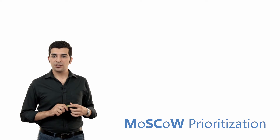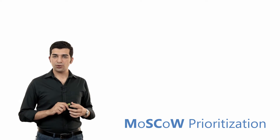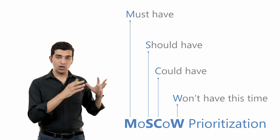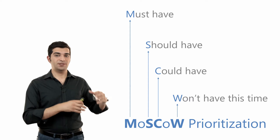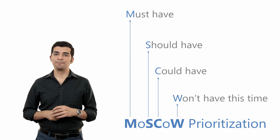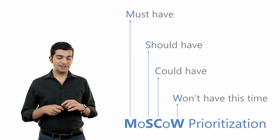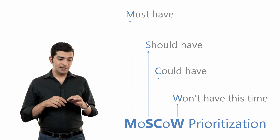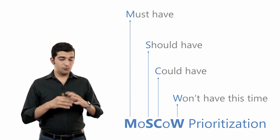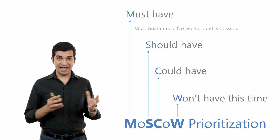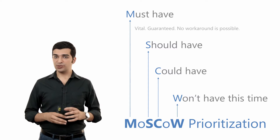For example, even Prince2 mentions the MoSCoW prioritization. MoSCoW stands for must-have items, should-have items, and could-have items. A must-have item is one that is really necessary for your product, and if you don't have it in your product, you can't even use the product.